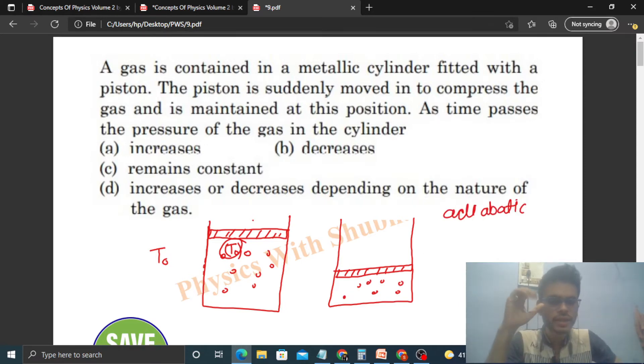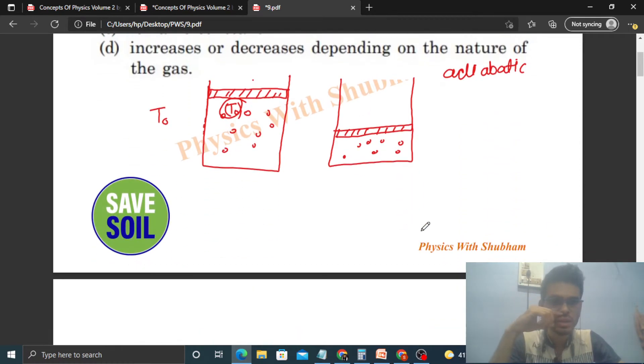So in an adiabatic process, the heat exchange that happens with the surrounding is equal to zero. Now, the first law of thermodynamics says Q = W + ΔU. So Q is zero.